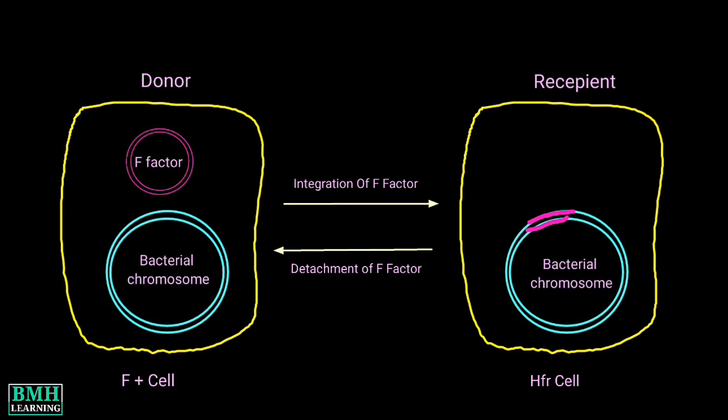In such a situation, the recipient cell becomes diploid for a short period of time for the part of the donor chromosome transferred into it. Such cells are therefore called merozygotes, partial zygotes, or merodiploids.